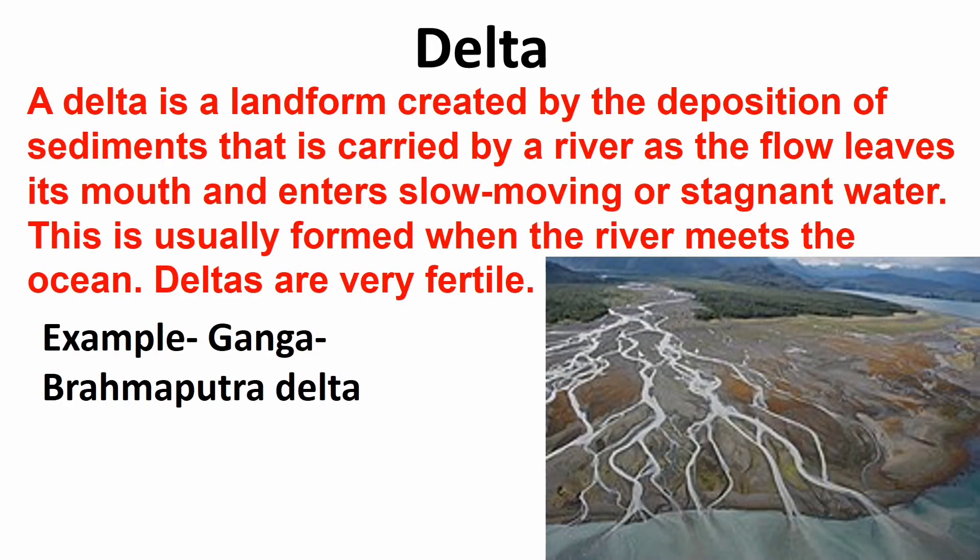Delta: A delta is a landform created by deposition of sediments carried by a river as the flow leaves its mouth and enters slow-moving or stagnant water. This is usually formed when the river meets the ocean. Deltas are very fertile. Example, Ganga-Brahmaputra Delta.